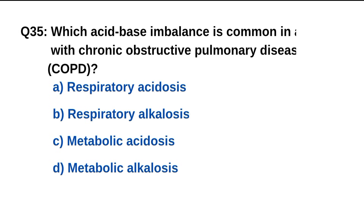Question number 35. Which acid-base imbalance is common in a client with chronic obstructive pulmonary disease (COPD)? The right option is A: Respiratory acidosis.